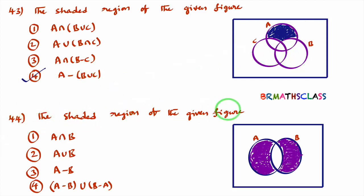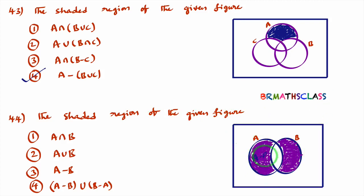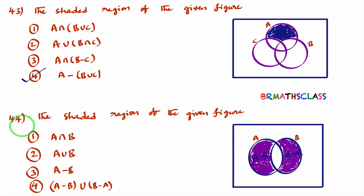Now see question number 44 — the shaded region of the given figure. You observe the shaded parts. This part is A minus B, which means A but not B. Similarly, this other part is only B, that means B but not A, which is B minus A. So this shaded part is A minus B and this shaded part is B minus A. Now, A intersection B is a wrong option, and A union B is also wrong as it includes the middle part too.